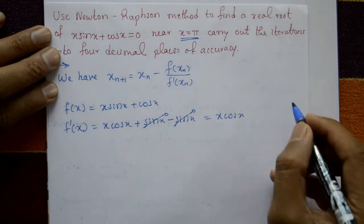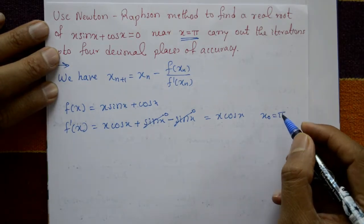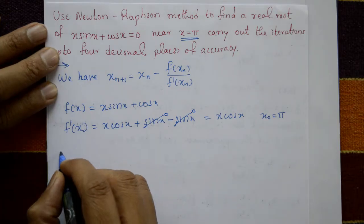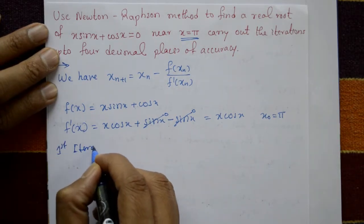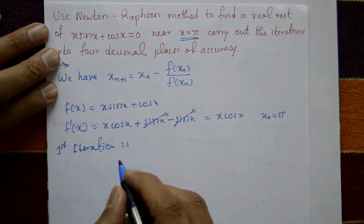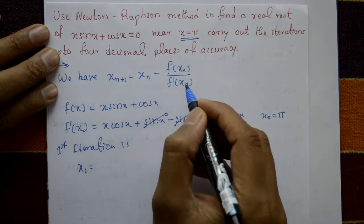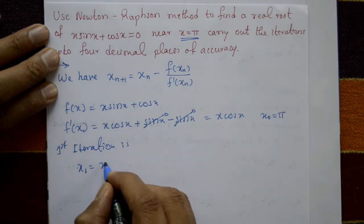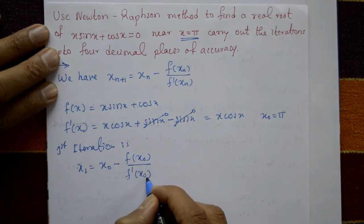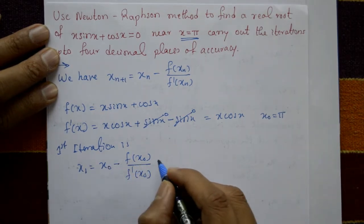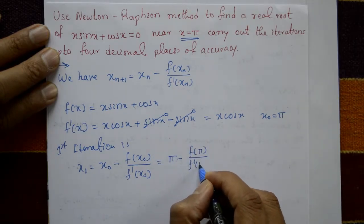The initial root is given as x₀ = π. For the first iteration, put n = 0: x₁ = x₀ − f(x₀) / f'(x₀), which becomes x₁ = π − f(π) / f'(π).